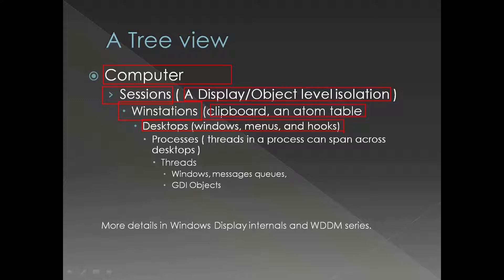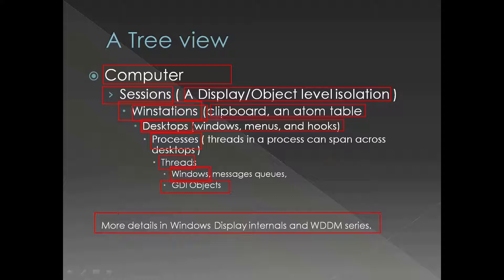A desktop can have windows, menus, hooks, etc. — most of the user objects. You cannot share those objects between desktops. All processes are associated with a window station, and all threads are associated with a desktop. Threads in a process can span across multiple desktops. We will have a detailed session on display internals in the WDDM series, and we'll also discuss the part where we bypass win32k.sys where OpenGL, DirectX, etc. come in.